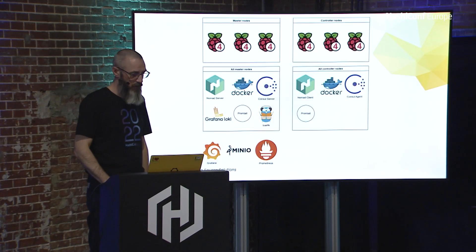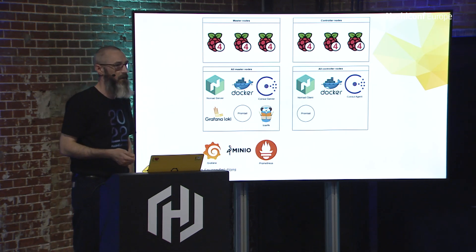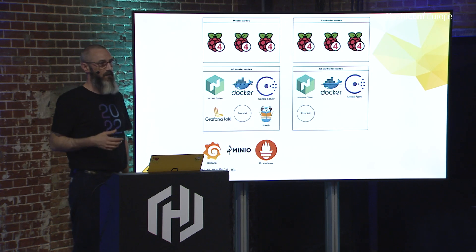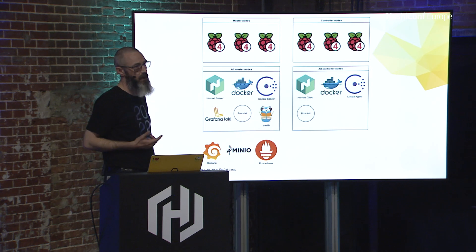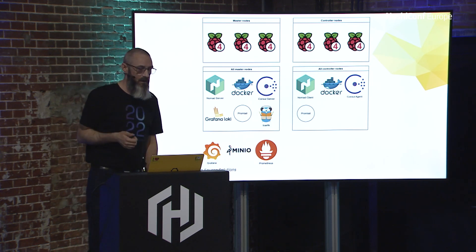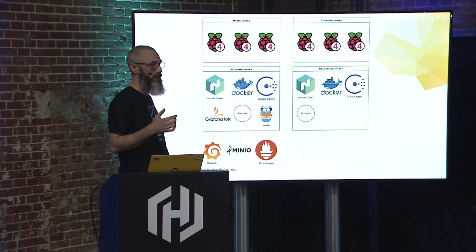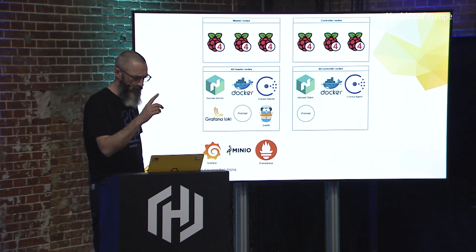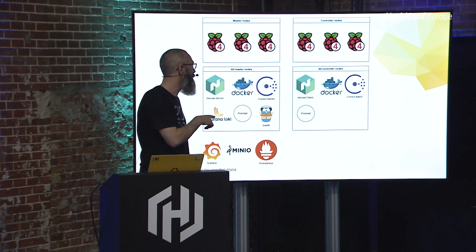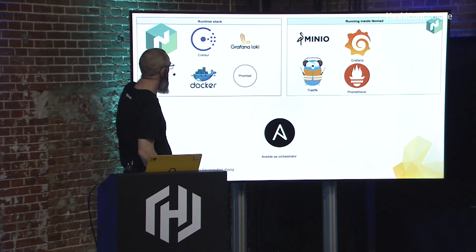I'm showing Raspberry Pi 4s here — this is actually the stack I developed on. I didn't develop on my laptop; the source code on GitHub only got local VMs added after it worked on my Raspberry Pi cluster. I have a cluster of six Raspberry Pis: three master nodes and three worker nodes. All master nodes have Nomad, Docker, Consul, Grafana, Loki, and Promtail natively. Traefik runs in the runtime on the master nodes as well.